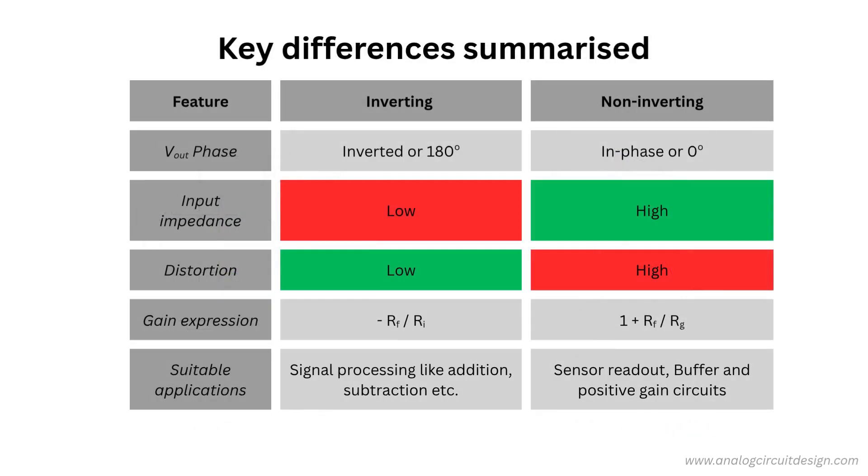Here, the key differences are summarized. It is much easier to add or subtract in inverting configuration. It offers low distortion. Major drawback is the low input impedance. Non-inverting configurations are suitable for sensor readout applications, where high input impedance is desirable. Signal addition and subtraction is difficult. Distortion is higher than inverting configuration.